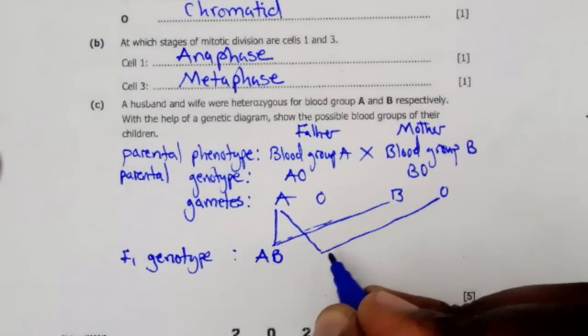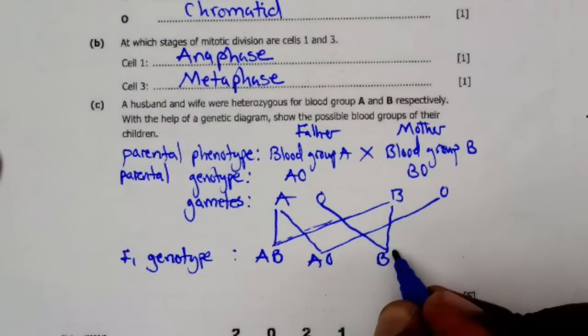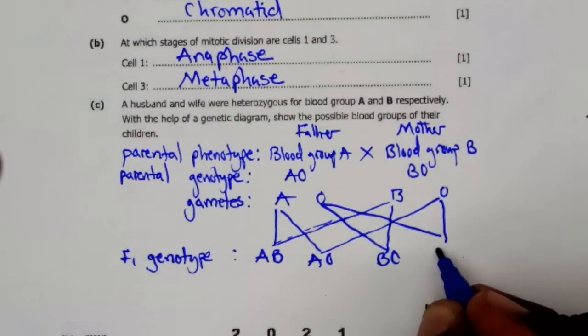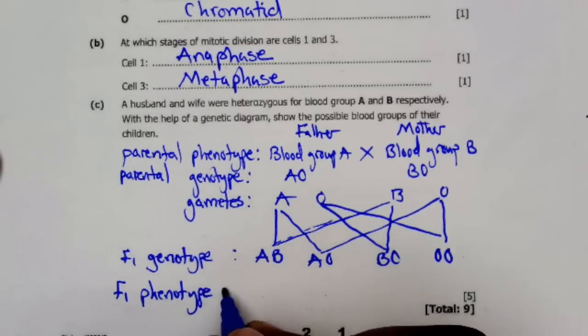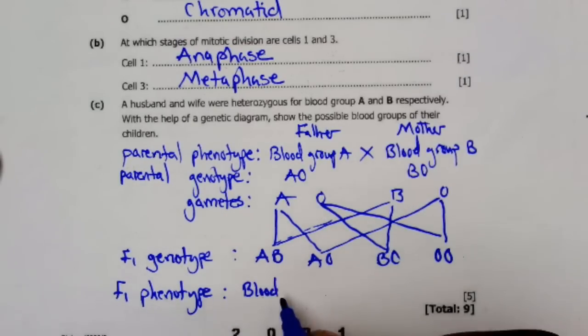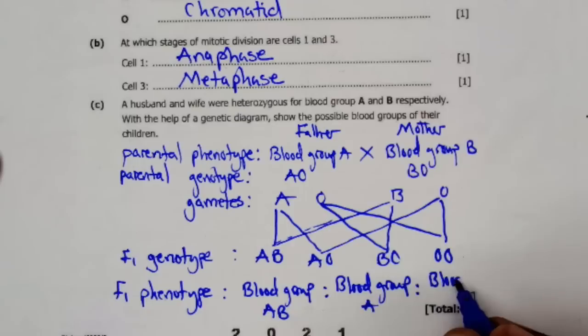Then the next step is to write the F1 offspring phenotype. So we have blood group AB, blood group A, blood group B, and blood group O. So this is how you write the genetic cross.